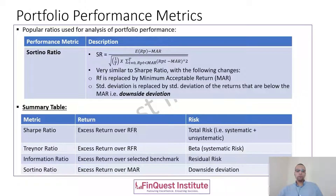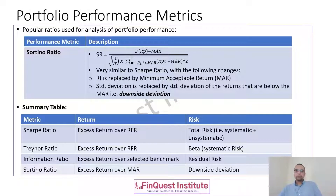Lastly, we have the Sortino ratio. Looking at the progression: we started with the risk-free rate as benchmark, then moved to a custom benchmark, and now we introduce the concept of minimum acceptable return (MAR). An investor may have a certain minimum acceptable return in mind and would want to use that to benchmark their portfolio manager's performance. So in the numerator, we replace the risk-free rate with the MAR.